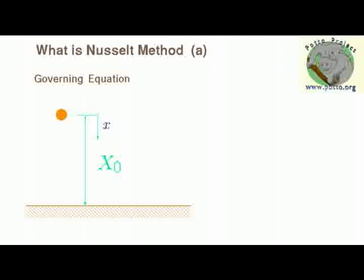In Nusselt method, we have to have a governing equation. For example, if we take a problem of a ball falling down from a distance, then the governing equation will be Newton's second law, which is the mass times the acceleration has to be equal to the force which is the mass times the gravity.